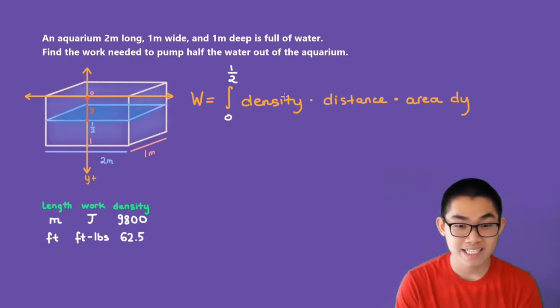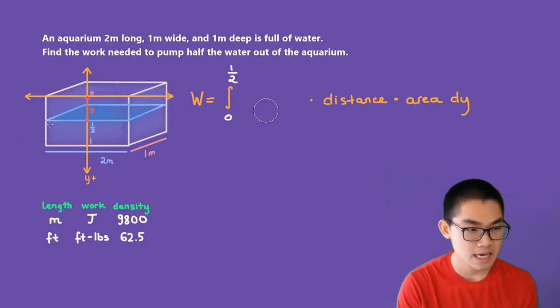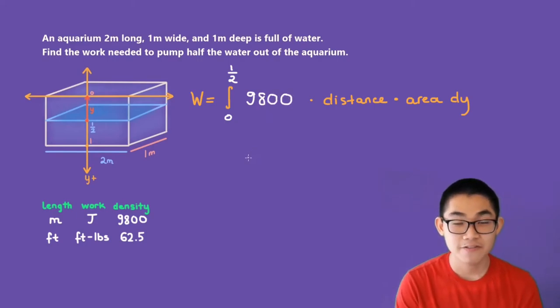Now, how about the density? If the problem is in meters, then the work will be in joules, and the density will be 9,800. If the problem gives you the length in feet, then the work will be feet pounds, and the density will be a different number, 62.5.